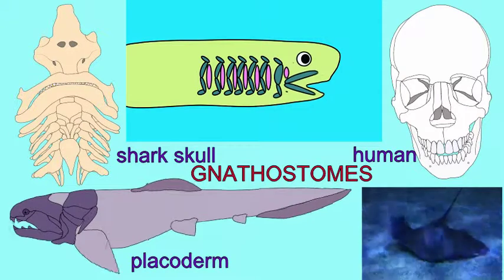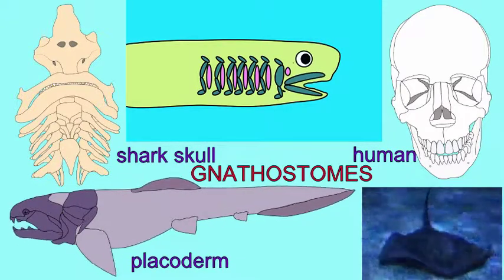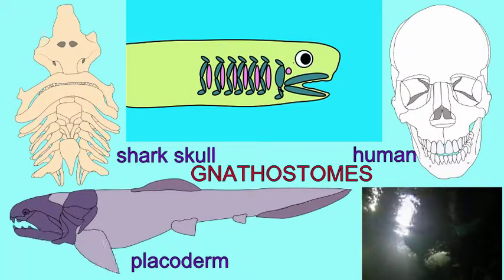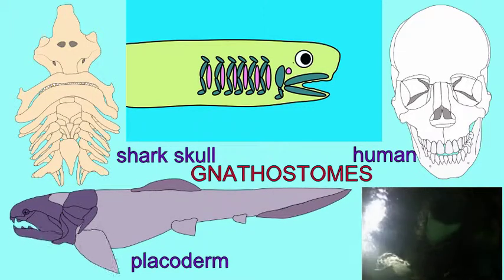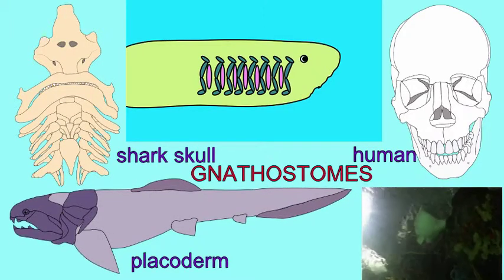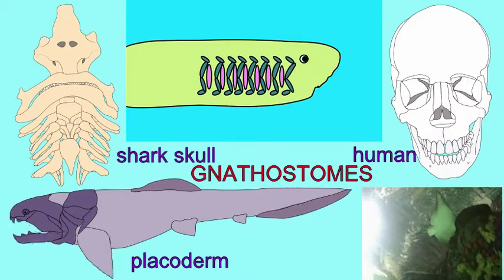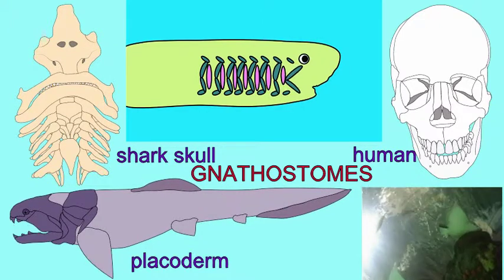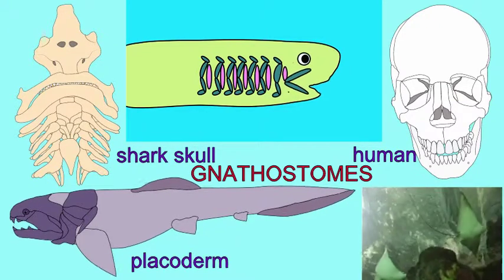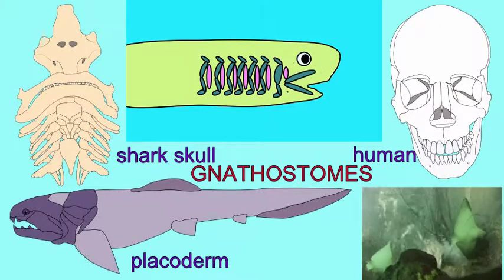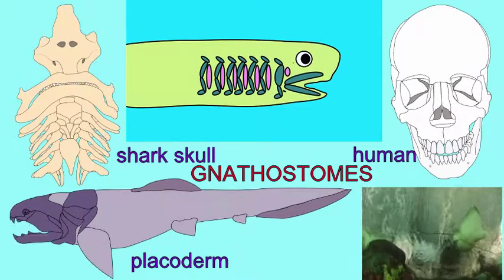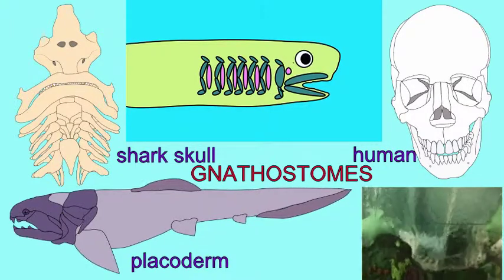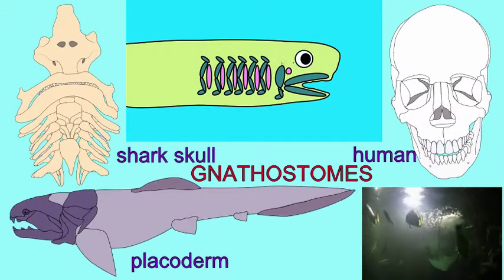The jawless vertebrates possessed a series of cartilage bars in the pharyngeal arches around the gills. The first pair of these arches moved to become the palatoquadrate and Meckel's cartilage, forming the upper and lower jaws of these jawed vertebrates.